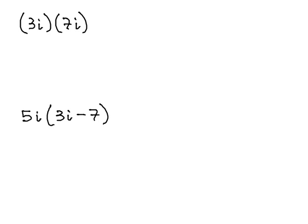When multiplying, we treat the i just like any other variable. At the end, if we have any exponents on i, we can evaluate that exponent, most commonly using the property that i squared is equal to negative 1.